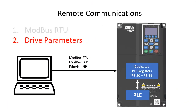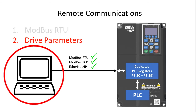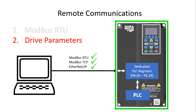Since your remote controller can access those drive parameters from Modbus RTU, Modbus TCP, or EtherNet/IP, it can read the PLC's results directly from those registers, or put things in the registers for the internal PLC to read. Easy, right? The beauty of this is now your external controller only has to manage one Modbus device — the drive — which makes your life so much easier.